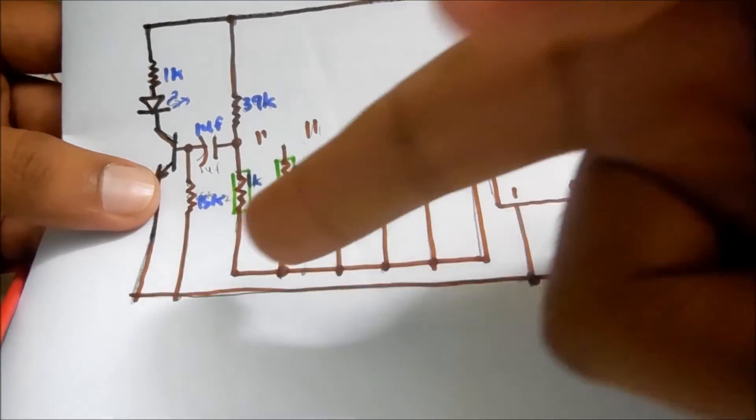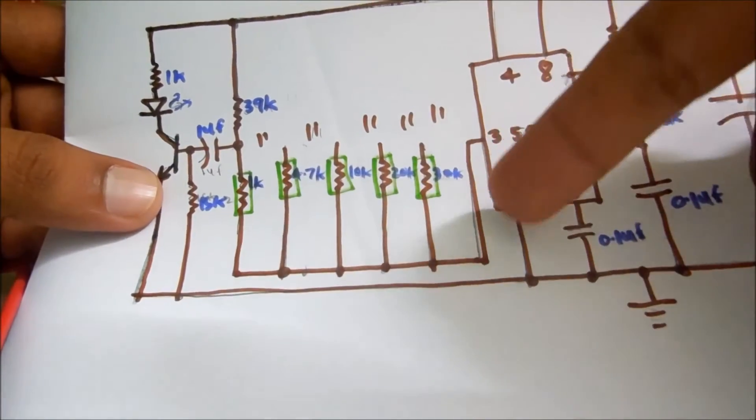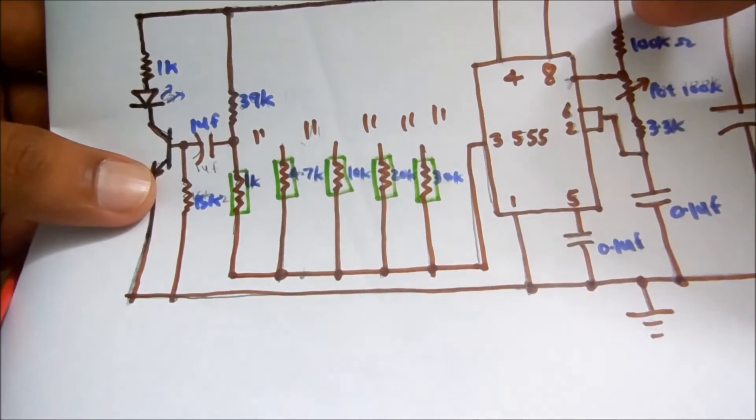And this is how we are using one, two, three, four, five. We are using six. The another one is 40K. So in this way, the circuit is made.